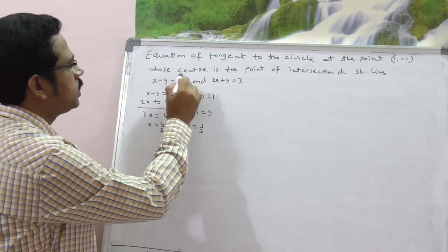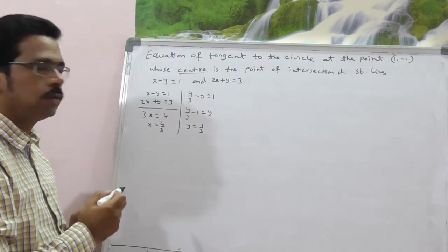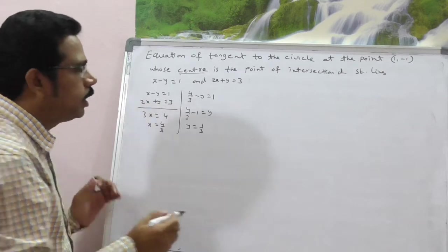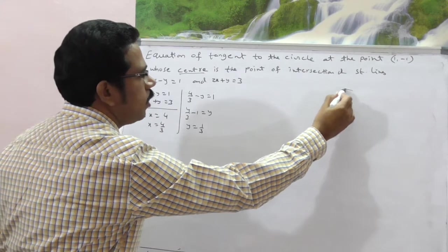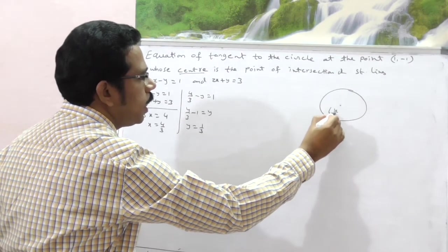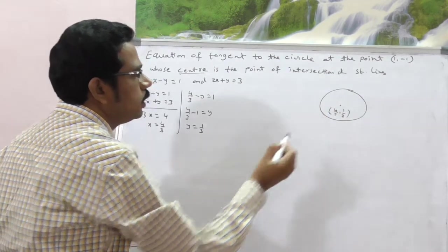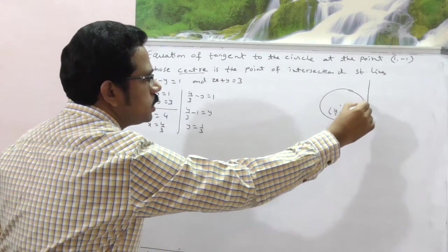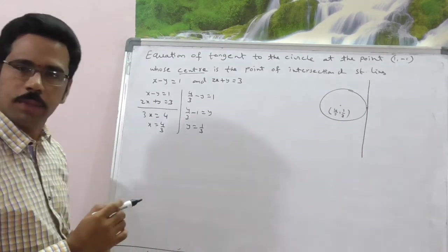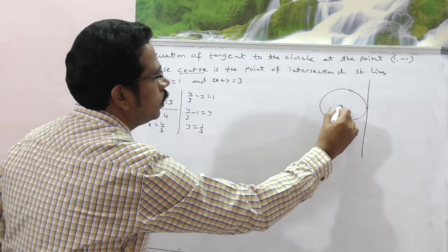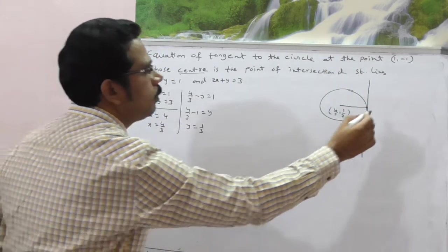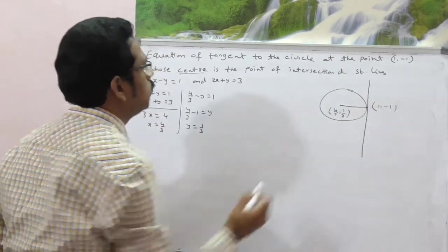Therefore, point of intersection is nothing but center of the required circle. Therefore, center is nothing but (4/3, 1/3). Just observe one rough diagram here. This is the circle. The center of this circle is (4/3, 1/3). A tangent touches the given circle at 1 point. So, already given that this point as what? (1, -1).